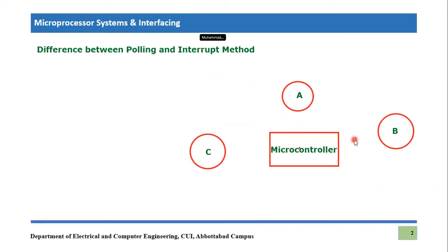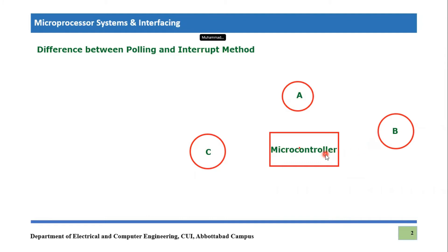These two terms are related to multiple device servicing when a microcontroller is serving various devices. Let's say we have a microcontroller that is serving devices A, B, and C — three different devices being served by this microcontroller. In the polling method, the microcontroller will actually monitor each device's status and take a decision whether that device needs service or not.